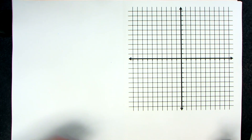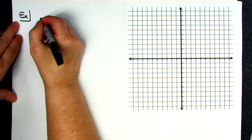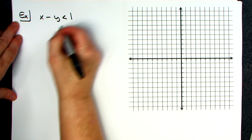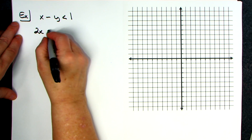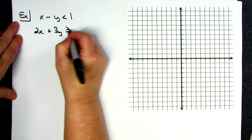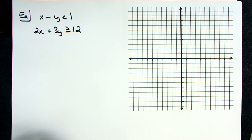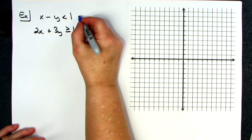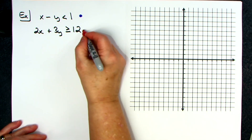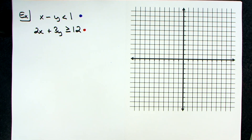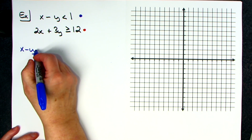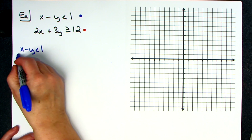Let's say we've got as a system: x minus y is less than one, and then 2x plus 3y is greater than or equal to 12. You do not have to color code, but if you do and you make a mistake you'll probably be able to find it easier. I'm going to do the top one in blue and the bottom one in red. Let's work on that top inequality: x minus y is less than one.